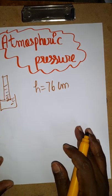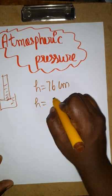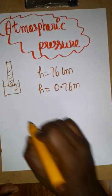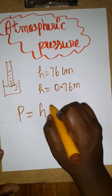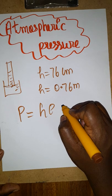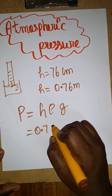Now I'm going to teach you how to calculate the atmospheric pressure. 76 centimeters we can call as 0.76 meters. So pressure is equal to h times rho times g, where height is 76 centimeters of the mercury, so it's going to be 0.76.